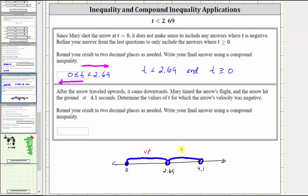Again, this is the interval where the velocity is negative, where the arrow is traveling down. And again, this is a compound inequality, where t is less than 4.1 reading from left to right, and reading from right to left, we can say that t is greater than 2.69.